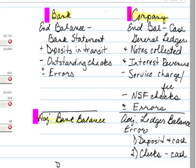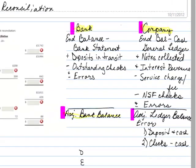Regarding errors that might occur for a company: a deposit is typically a plus to cash, so we have to determine whether that deposit is too high or too low. If it's too low, we add more cash in; if the deposit was too high, we pull it back out. For our checks, normally that's a reduction to our cash, so if we wrote a check and made an error — recorded it not quite enough — we need to take additional dollars out. If it was for too much, we need to add some back. We have a relationship of our numbers from the bank to the company, and now we're going to take a look at an actual bank reconciliation.